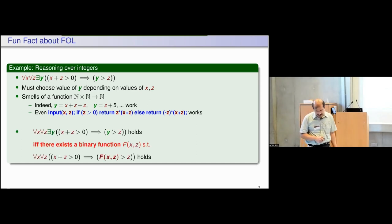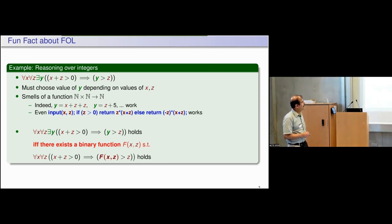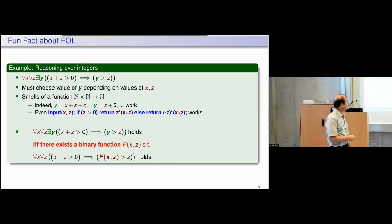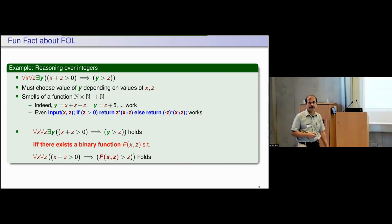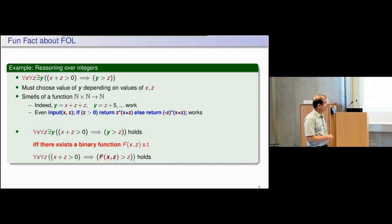Indeed it is the case that this formula holds if and only if there exists a binary function of x and z such that when I substitute it in place of y the formula holds. If you compare the two formulas, the existential quantifier is gone and the existentially quantified variable has been replaced by this function symbol which was not present before.